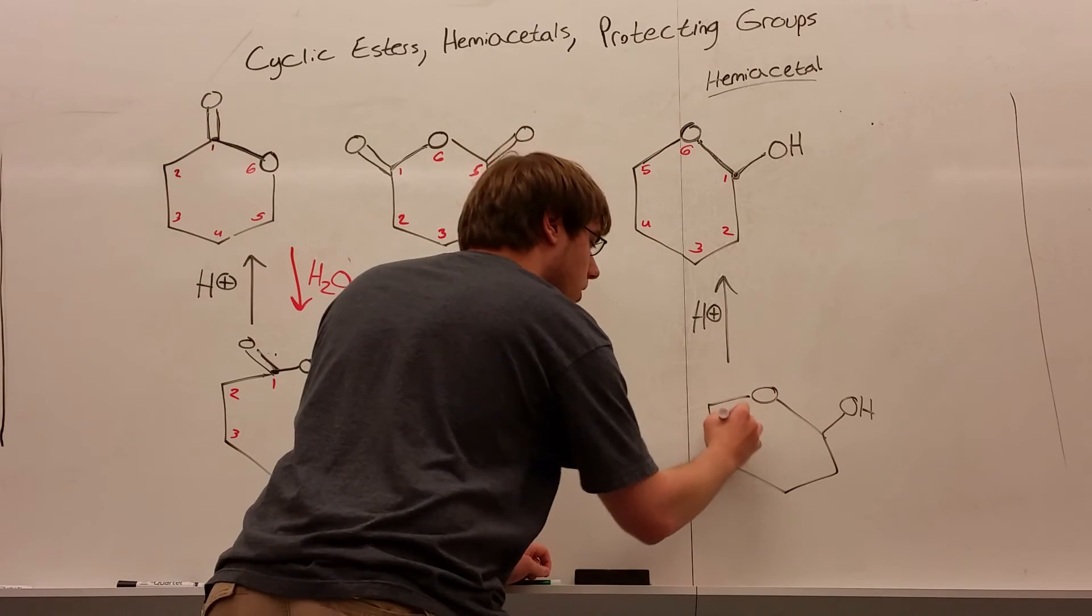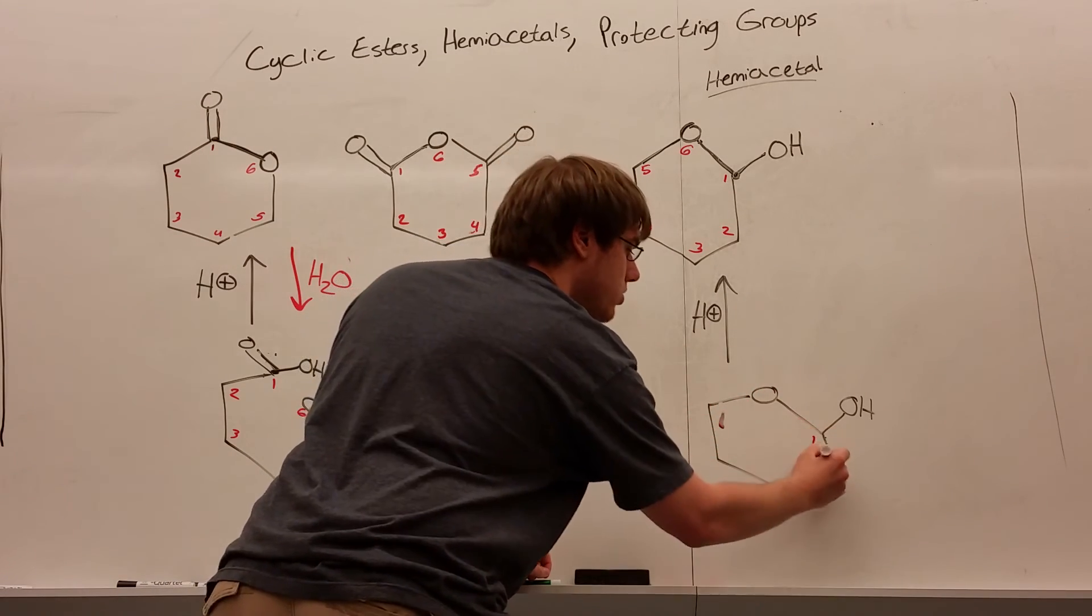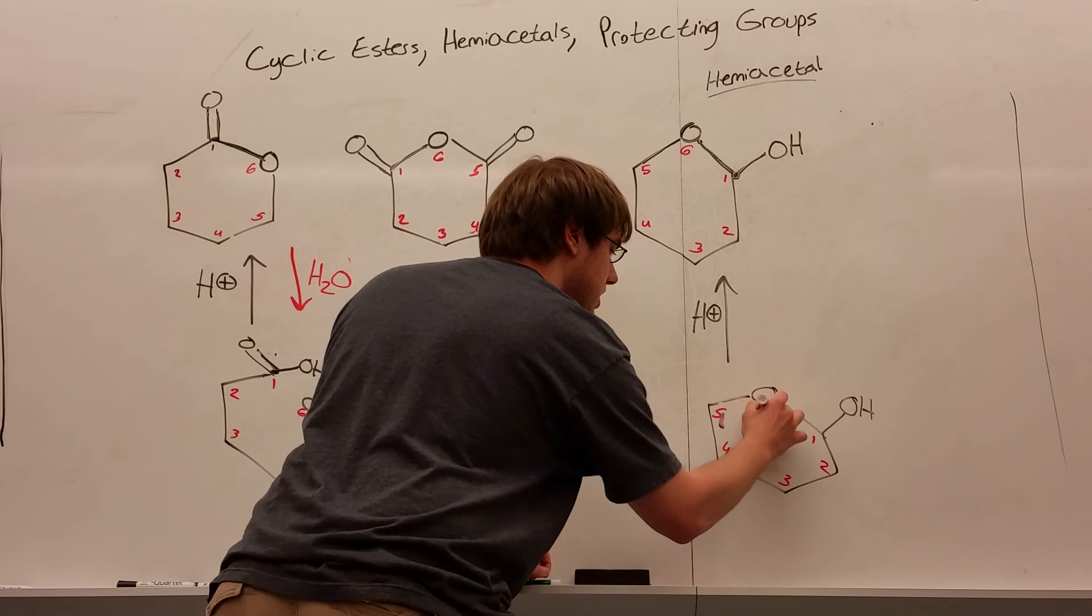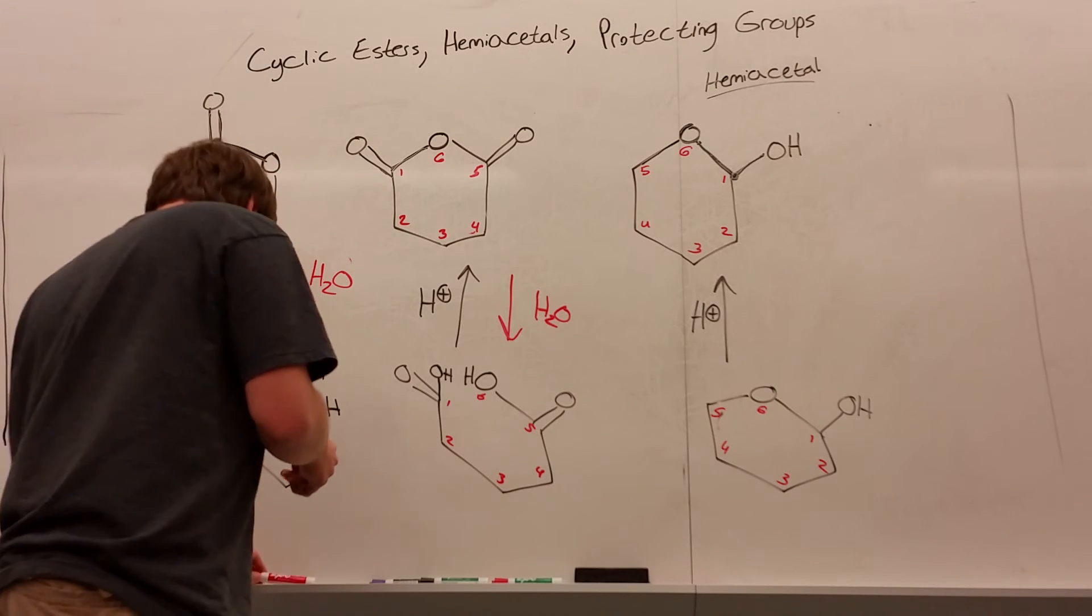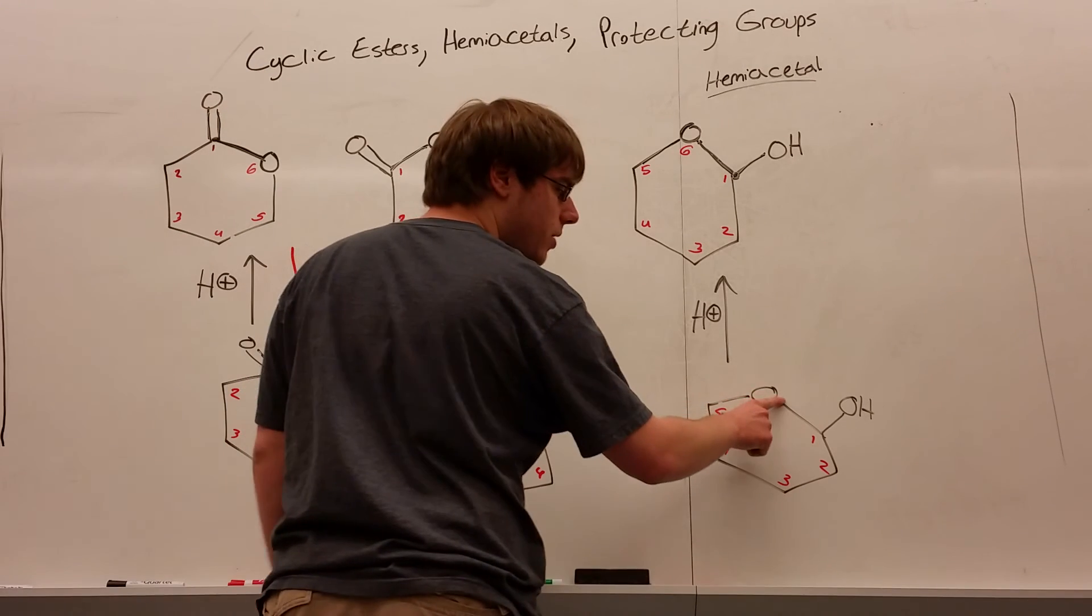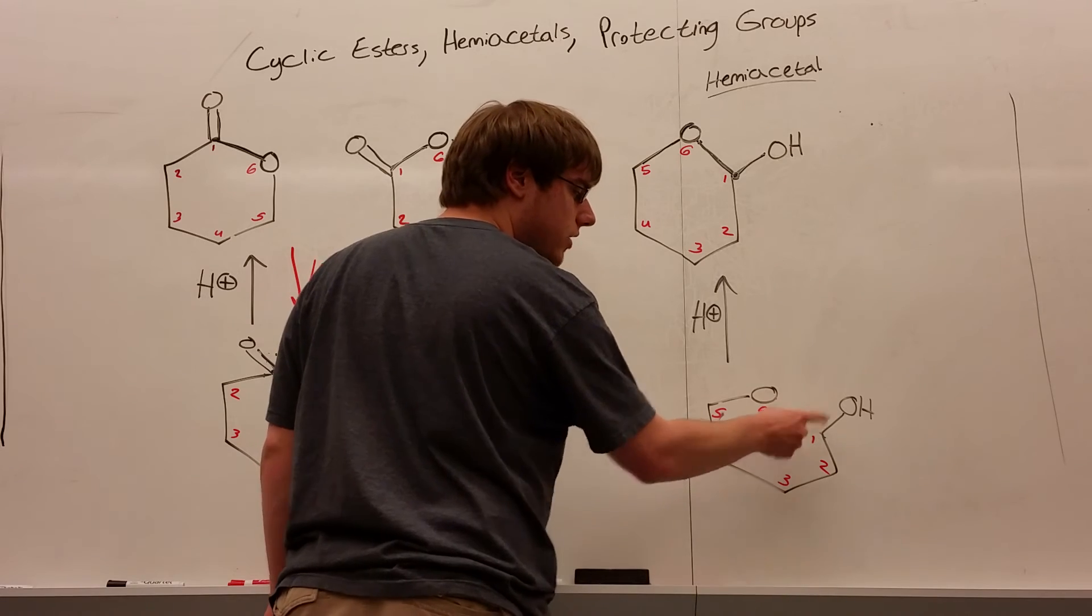We've got one, or I numbered it differently this time, one, two, three, four, five, and six, with the oxygen being six in the ring. Once again, what you will do now is you're going to erase the bond that connects the oxygen in the ring to the carbon with the other oxygen.